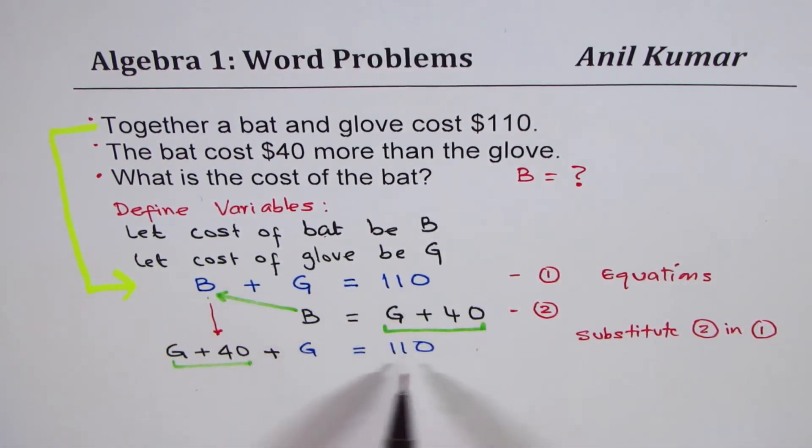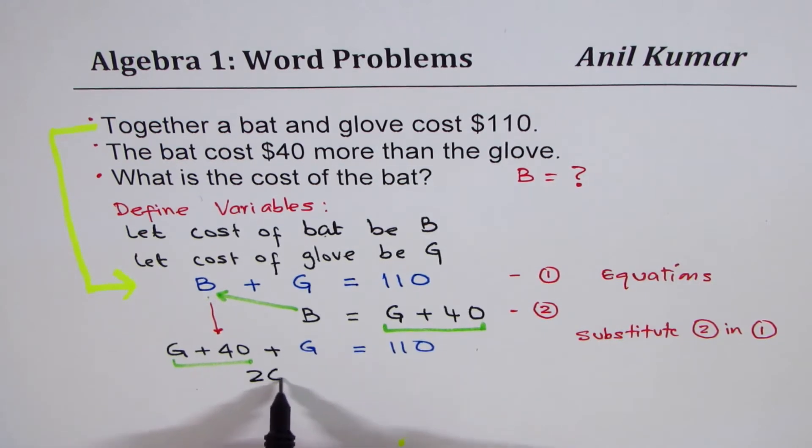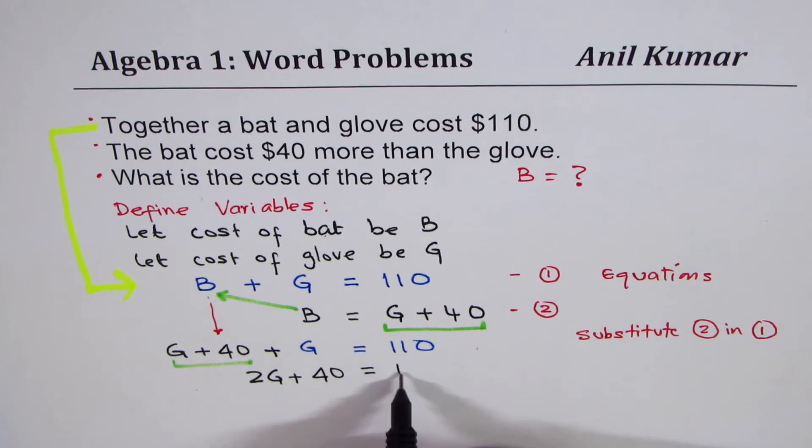And then this equation 1 changed to that form. Now, when we say G and G, it means cost of glove, cost of gloves. There are two gloves cost.